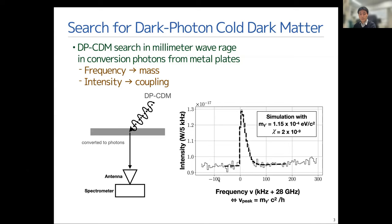For example, we can show the spectrum of that kind of measurement. This is a result from a simulation with setting the mass parameter at 1,100 microelectron volts, and chi is equal to 2 times 10 to minus 9.